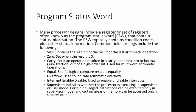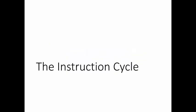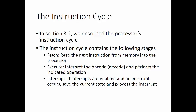Now let's review a bit about the instruction cycle. This corresponds to chapter 14.3 of the text and gives more details beyond what we discussed in chapter 3. In section 3.2, we describe the processor's instruction cycle. It contains the following phases. Fetch, read the next instruction from memory into the processor. Execute, which interprets the opcode through decoding and performs the indicated operation. And interrupt. If interrupts are enabled and one of them occurs, save the current state and process the interrupt. We can now add the indirect cycle.